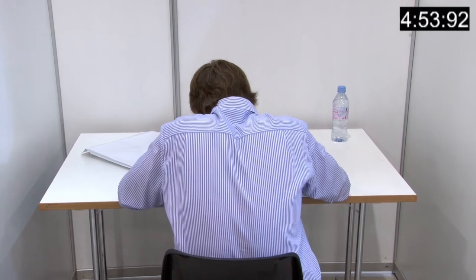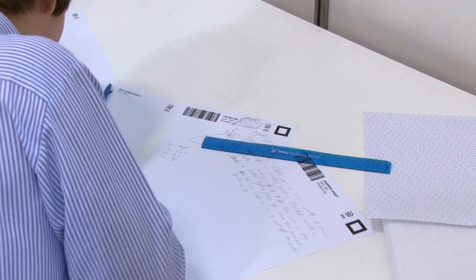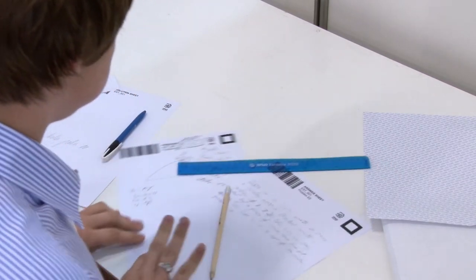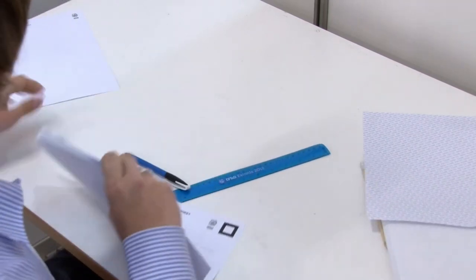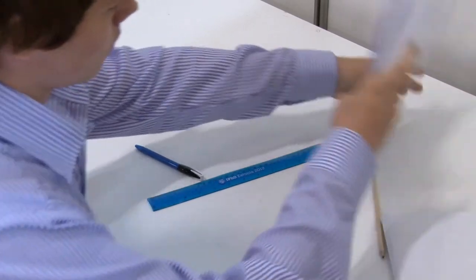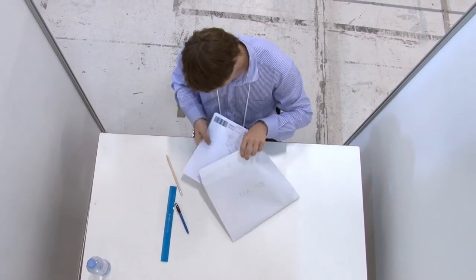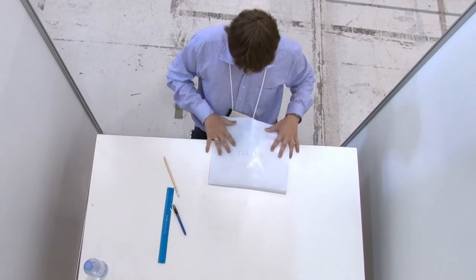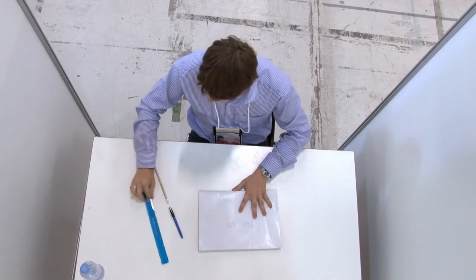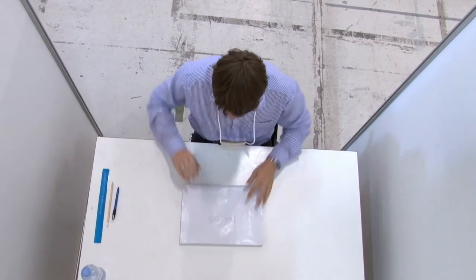The competition is over when you hear the signal three times. When you hear the final signal, finish your writing, put all the papers back in the envelope as they were at the start, and leave the envelope on the table. Leave your table as it was before the competition and move on to the corridor on the left.